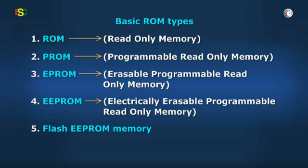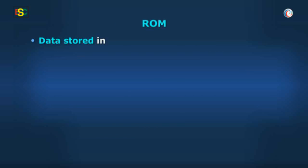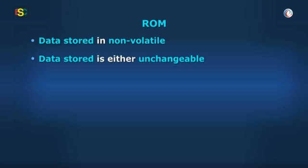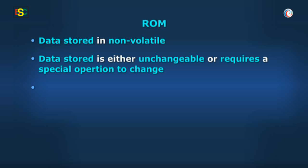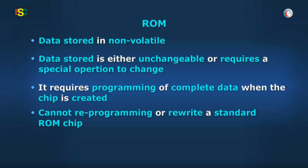Each type has unique characteristics, but all types of ROM memory have two things in common. First, data stored in these chips is non-volatile — it is not lost when power is removed. Second, data stored in these chips is either unchangeable or requires a special operation to change it. It requires programming of complete data when the chip is created.